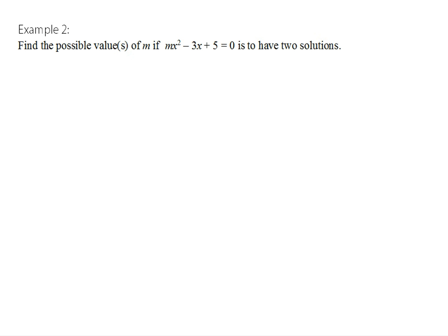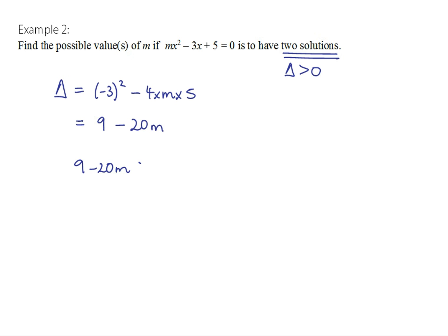Here's a fairly common kind of example: find the possible values of m if mx squared minus 3x plus 5 equals 0 is to have two solutions. Two solutions means we want the discriminant to be positive. Working out the discriminant: b squared minus 4ac gives 9 minus 20m. We need 9 minus 20m to be greater than 0. Adding 20m to both sides and dividing by 20: m is less than 9 over 20. So if m is anything less than 9 over 20, this quadratic equation will have two solutions.